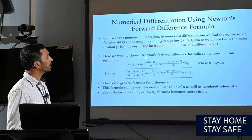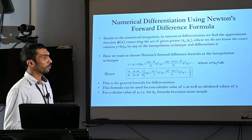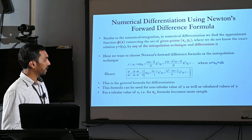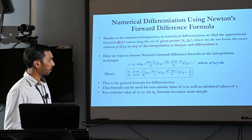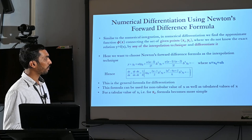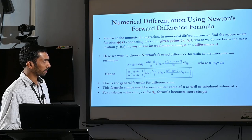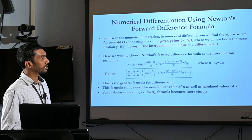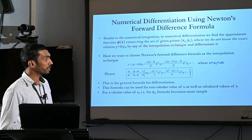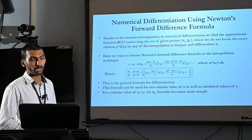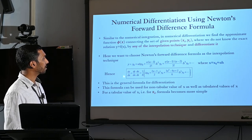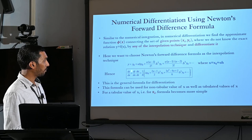Here, we choose Newton's Forward Difference Formula as the interpolation technique. That is, y equals y0 plus u times delta y0 plus u(u minus 1) by 2 factorial times delta square y0, up to the nth term, where x equals x0 plus u*h, or u equals (x minus x0) divided by h. So we can write dy/dx as dy/du times du/dx.